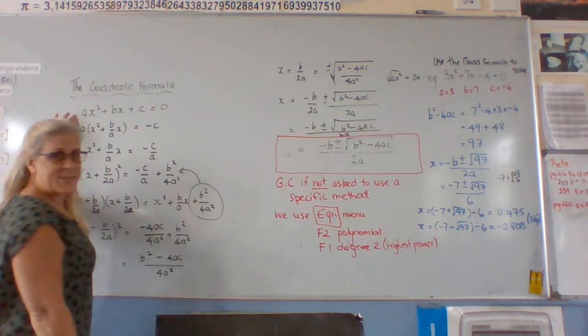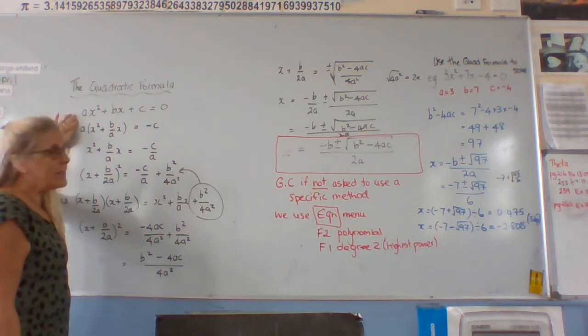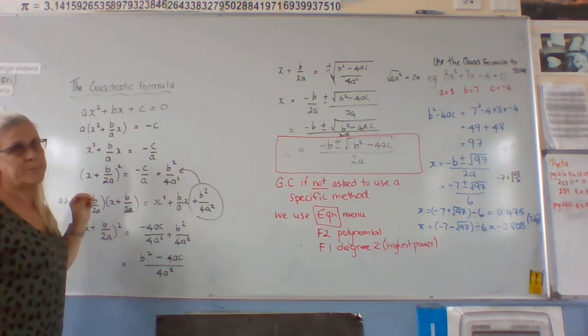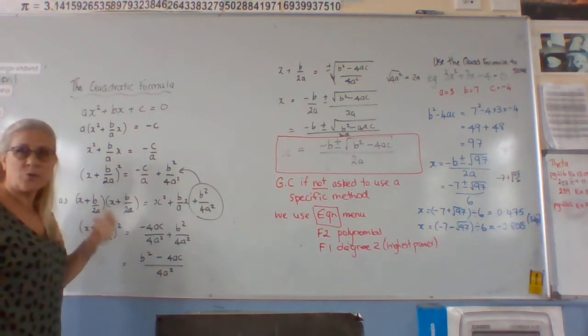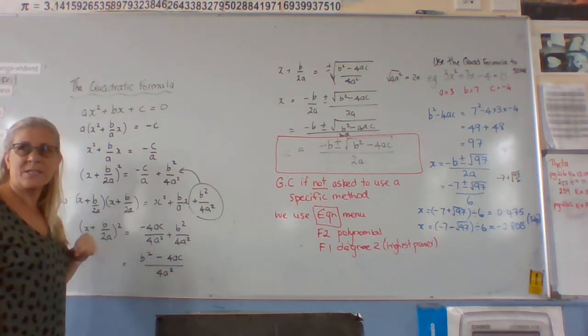So we've got this formula that's ax squared plus bx plus c equals 0. That means we're solving, so we're finding solutions. We know in a quadratic we have two solutions, that's what we're aiming to get to.